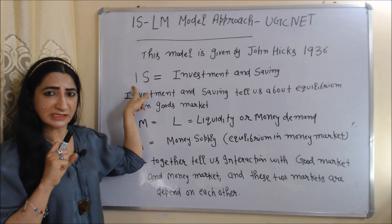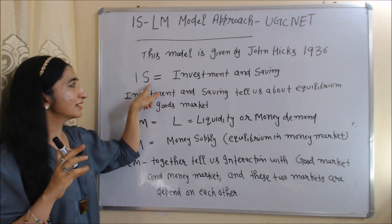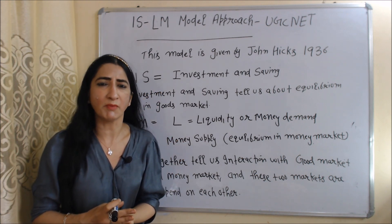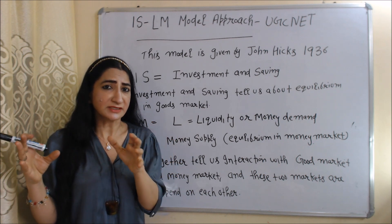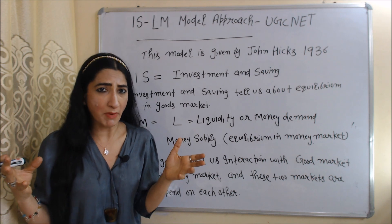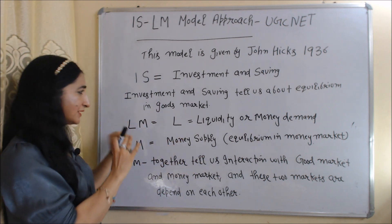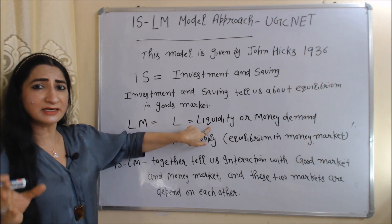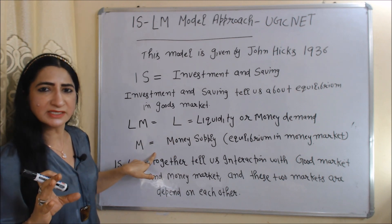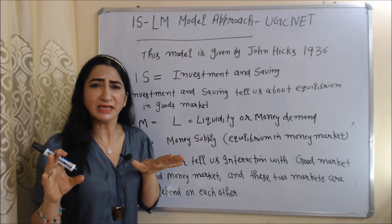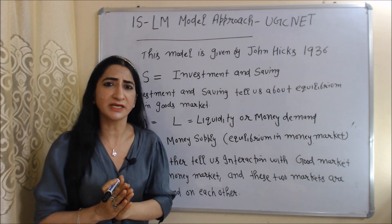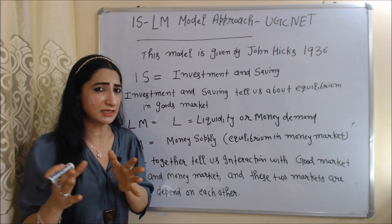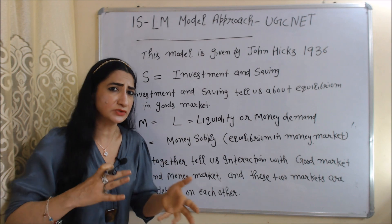In this model, IS represents investment and saving — I represents investment and S represents saving. Investment and saving mainly tell us equilibrium in the goods market, or the product market. LM represents liquidity and money supply — L represents liquidity or money demand, and M represents money supply. Money demand and money supply tell us equilibrium in the money market.